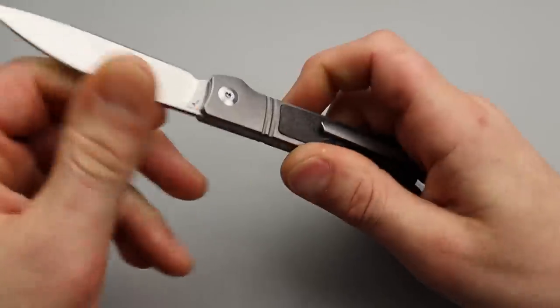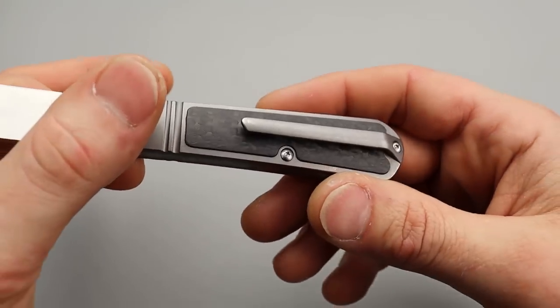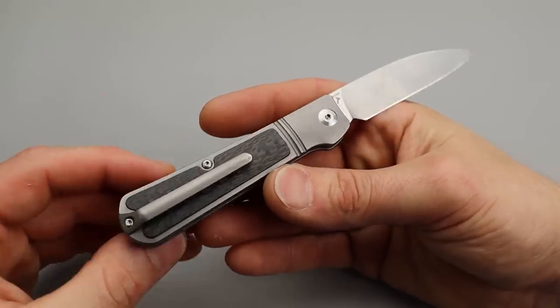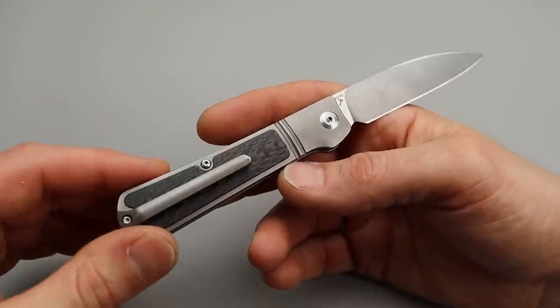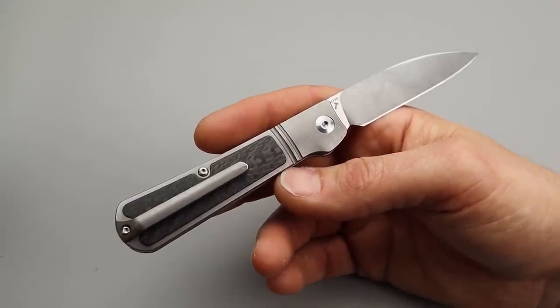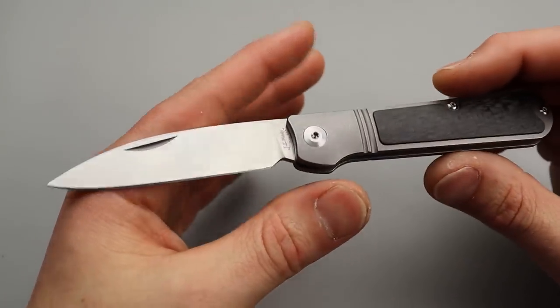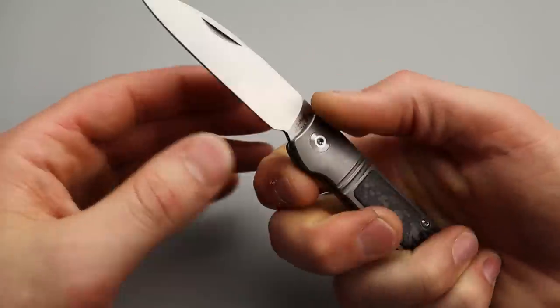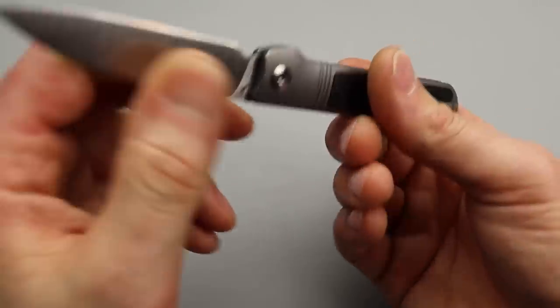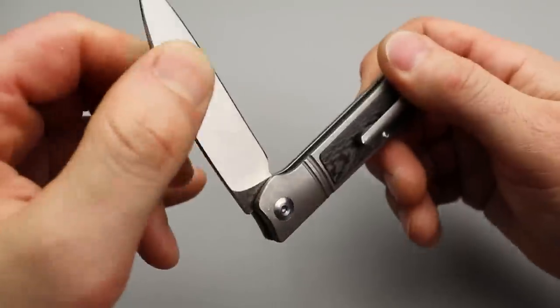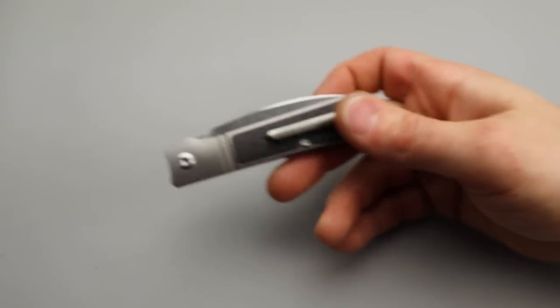We have M390 steel, titanium scales, and a carbon fiber inlay on both sides, and it actually has a pocket clip. Now a lot of traditional knives don't have pocket clips, which I prefer a pocket clip because I do like to carry on a clip. Now you can get sheaths for these and we'll look at those here in a second too. Let's get to the next one.